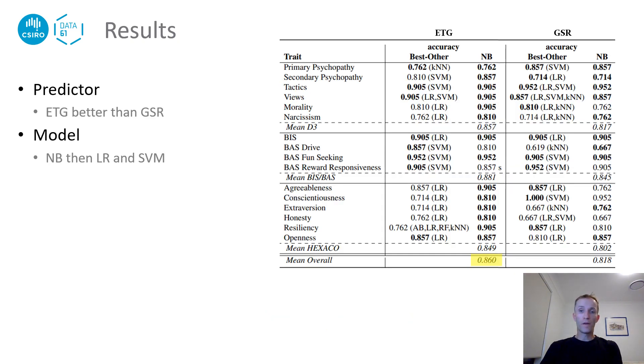We don't have time for thorough analysis here, so I refer you to our paper for detailed examinations of the results, also including the F1 scores, which are not shown here. However, the comparative analysis of ETG and GSR shows that the former is a slightly better predictor of the personality traits, although GSR performs better on primary psychopathy and tactics when taken individually.